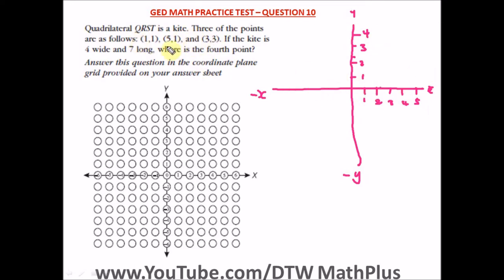For the first point, x is at one and y is at one, so that's somewhere here. The next point is x at five and y at one, which will be here. That's the second point.